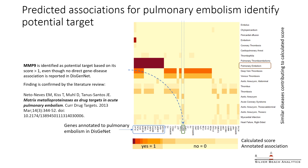To demonstrate the utility of this approach in drug target identification, we can look at detailed predictions of genes associated with pulmonary embolism. For example, matrix metalloproteinase MMP9 has no direct association with this disease, but its relation to embolism could be predicted from MMP associations with aneurysm and myocardial infarction, which co-cluster with pulmonary embolism in the embedding space.